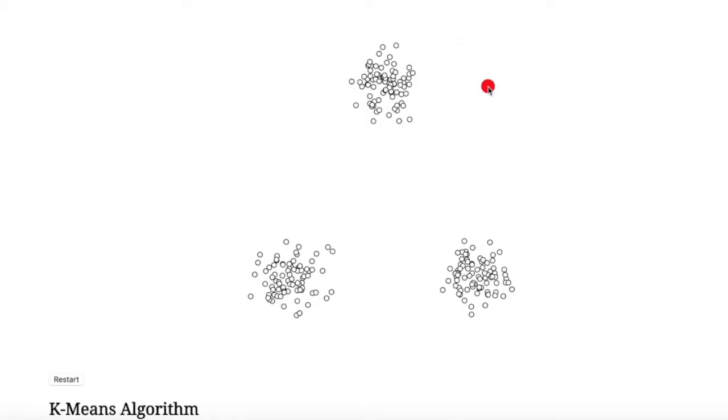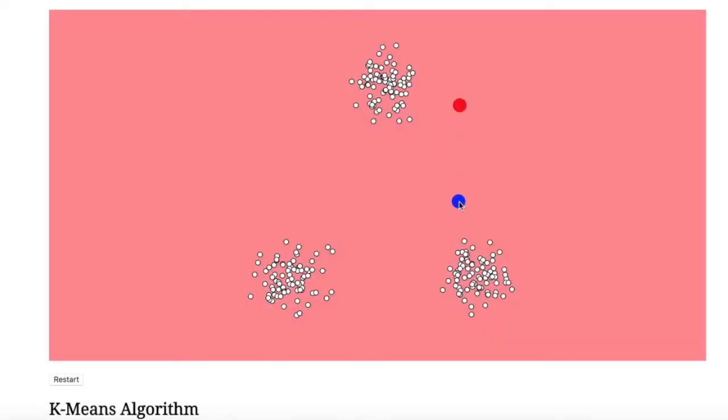To be clear, a centroid isn't a data point. It's simply a representation of the cluster's center. This first centroid is red. The second centroid is blue, and the third centroid is green. I'm choosing where the centroids are being placed in this example, but in practice, you can understand the centroids to be placed randomly.